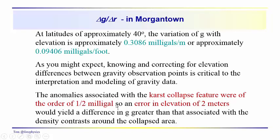We need to compensate for these changes in delta G with changes in elevation. So one half milligal or so, that collapse feature. Get your elevations wrong, you'd miss it altogether, or you might interpret it as being somewhere else.